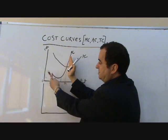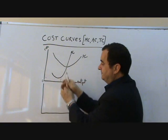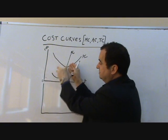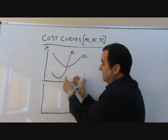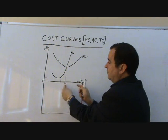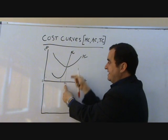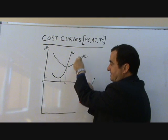Up to that point, the marginal, even if the marginal is rising, the marginal is less than the average, so the average is falling. Beyond this unit Q1, the marginal cost is high now, and it's higher than the average, so it's dragging the average up.